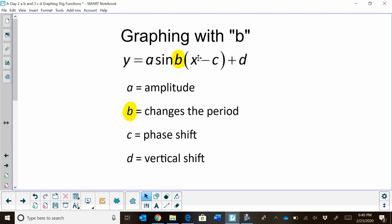Now b is going to be the coefficient to the x, or a lot of times this is theta, so it's the coefficient to the angle. So let's take a look at a few examples.